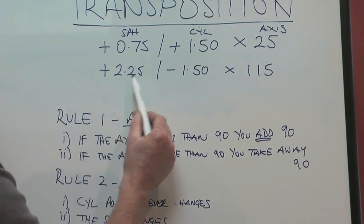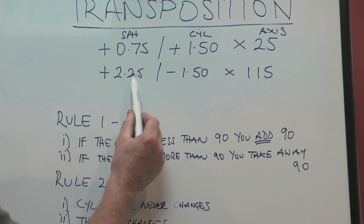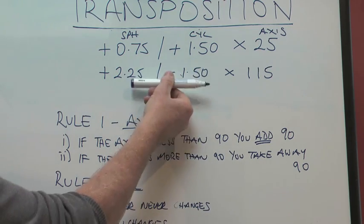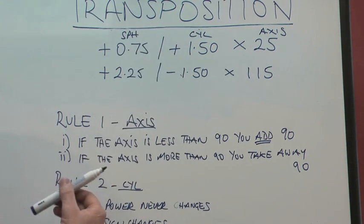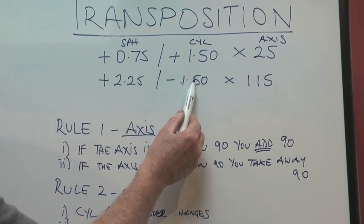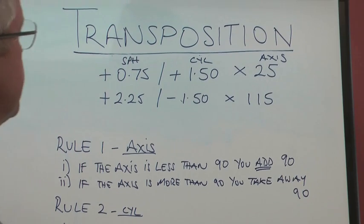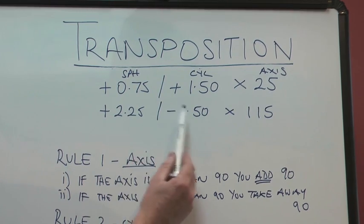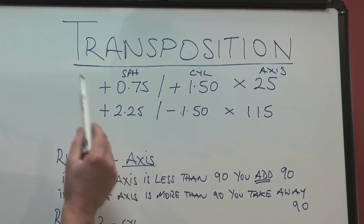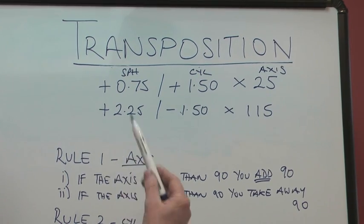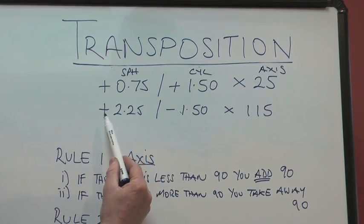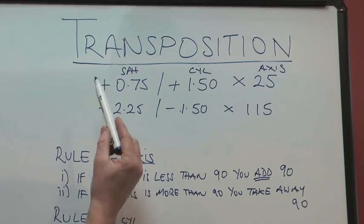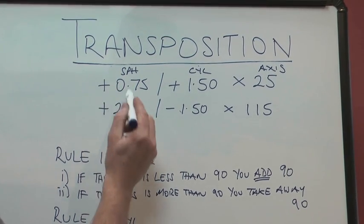So let's look at this example here down below. We've got a plus 2.25, and we have a minus 1.50. If we want to transpose that back into the plus-cylinder form, we have to take the 1.50 away from the 2.25, and that equals 0.75. So it's the difference between the two. The sign always corresponds to the sign of the bigger number. The bigger number between these two is 2.25. So the sign is a plus. So you end up with a plus 0.75.